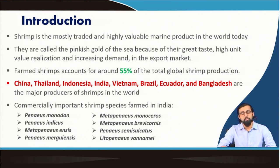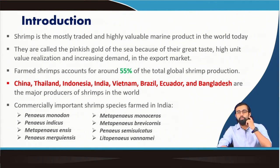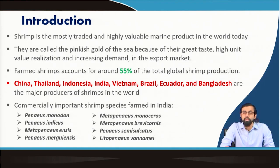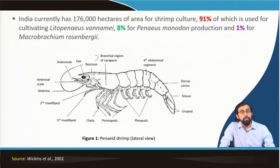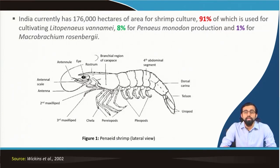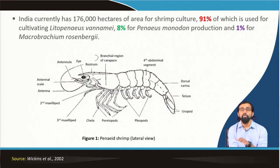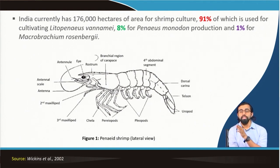The shrimp species found in India include Penaeus monodon, Penaeus indicus, Metapenaeus dobsoni, and others. In India, almost 176,000 hectares of area is used for culturing different kinds of shrimps. 91 percent is used for cultivating Litopenaeus vannamei, 8 percent for Penaeus monodon, and 1 percent for Macrobrachium rosenbergii.